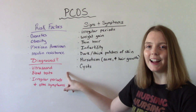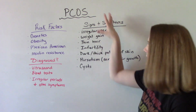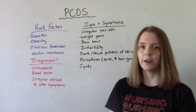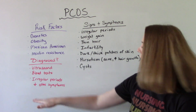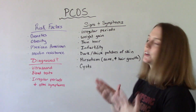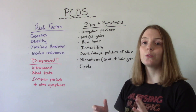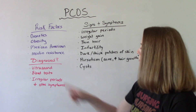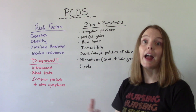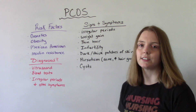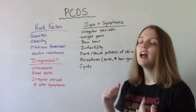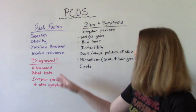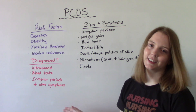How is PCOS diagnosed? First they're going to look at signs and symptoms, with the big one being irregular periods, and whether you have any other symptoms of PCOS that go along with it. Then they'll want to rule out other conditions — they might do an ultrasound to see if you have any cysts, and blood tests checking for hormone levels, blood glucose, and insulin.